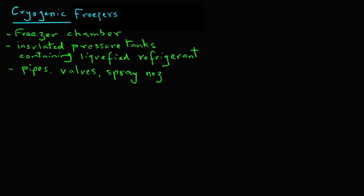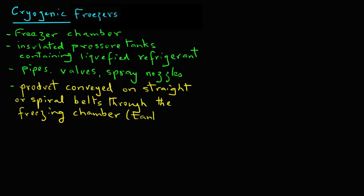There are spray nozzles in the freezing chamber from which the liquid cryogen is discharged onto the product. The food product is conveyed on either a straight or spiral belt that runs through the freezing chamber.